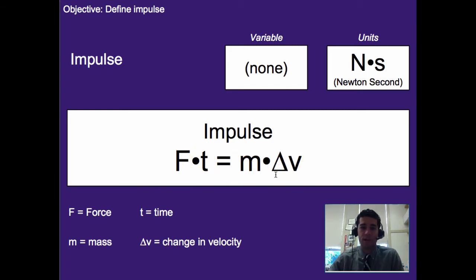There is no official variable for impulse. Sometimes people use I, but usually that's not a proper form. So you're just going to have to use the equation form in this sense. The units are newton times a second, and that's because force is in newtons and time is usually in seconds, so we get newton times a second.